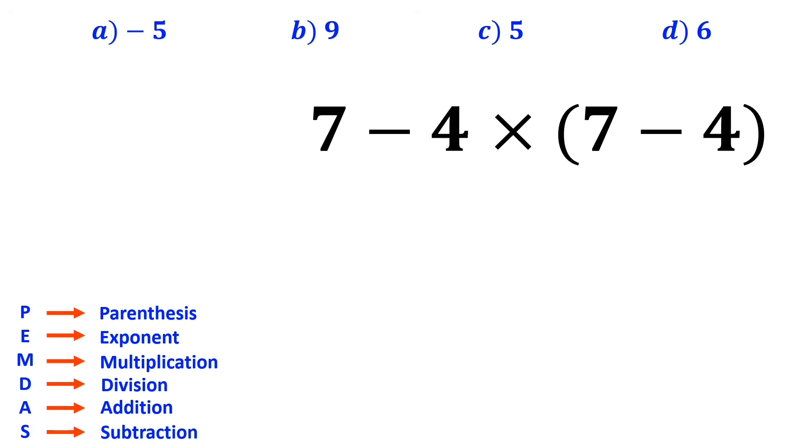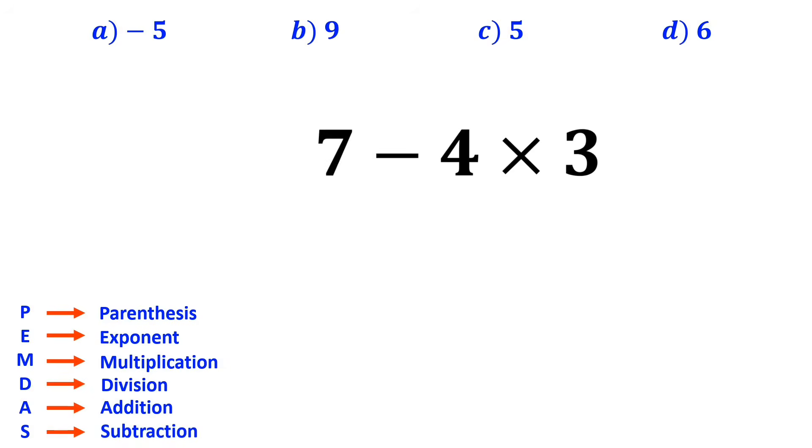So according to this rule, we first go to the parenthesis, and this expression becomes 7 - 4 × 3.